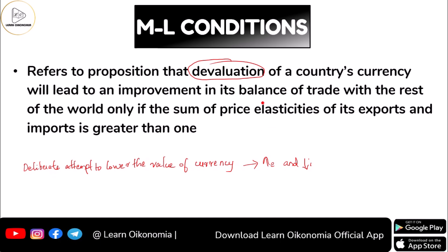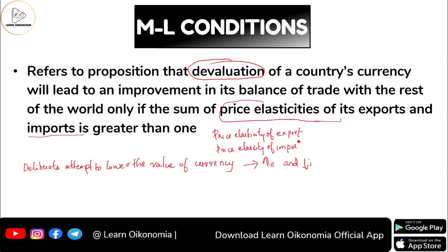Here we have to consider two things: the price elasticity of exports and the price elasticity of imports. The sum of these two things must be greater than one. If the sum of the price elasticity of exports and the price elasticity of imports is greater than one, then we can say that devaluation will have a favorable impact on the balance of trade.